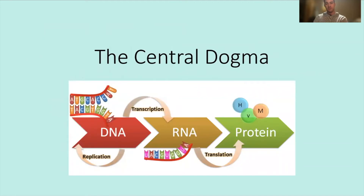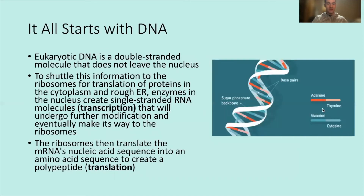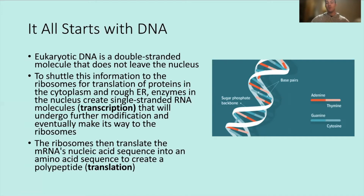We're going to dive right in and review the central dogma: DNA to RNA to protein. Eukaryotic DNA is double-stranded and does not leave the nucleus. Enzymes in the nucleus create a single-stranded RNA molecule through transcription, which then makes its way to the ribosome. Ribosomes translate the mRNA's nucleic acid sequence into an amino acid sequence to create a polypeptide — that process is known as translation.